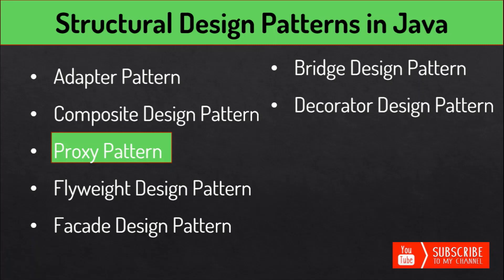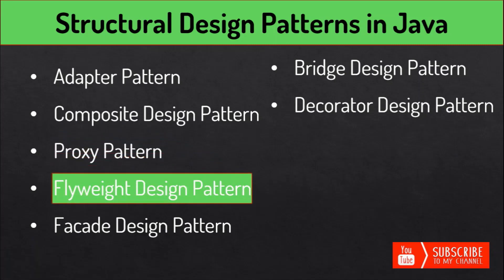The Flyweight design pattern creates a lot of objects of a class. A flyweight is a shared object that we can use in multiple contexts simultaneously. We apply it to reduce the load on memory by sharing objects, which can be important for low-memory devices. One of the best examples of flyweight pattern implementation is the string pool in Java.